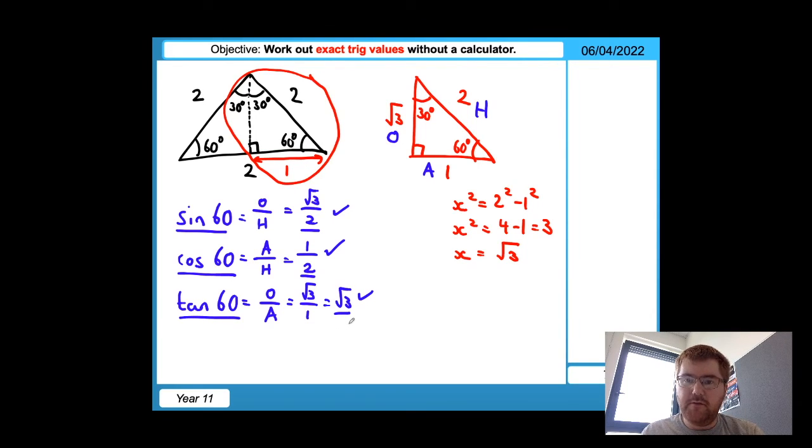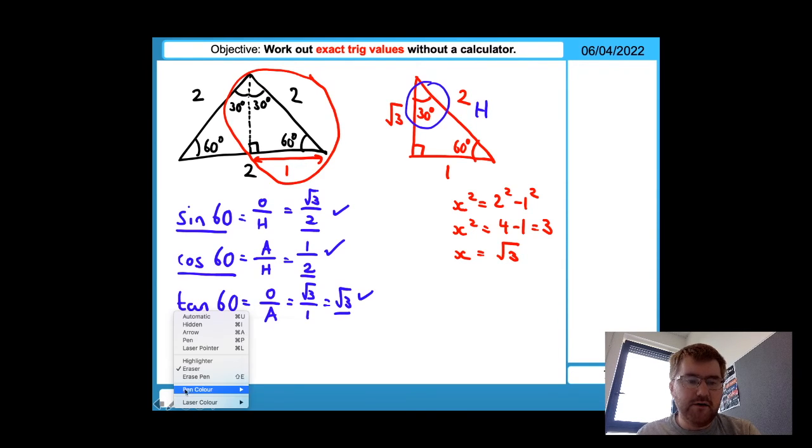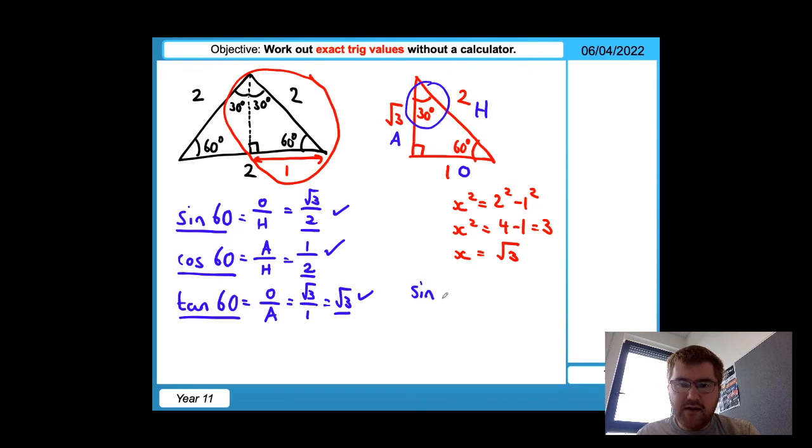Now what we're going to do is focus on the 30 angle here. So notice, because I'm focusing on this angle, these two are going to swap. So my new opposite is going to be opposite the 30 angle, which is O. And then the adjacent side will now be this root three. So things are going to be changing around. From here, I can now work out sine 30, cos 30, and tan 30 as well, in the same formula as over here. So sine 30 is equal to opposite, which is one, divided by the hypotenuse, which is two. So sine 30 is a half.